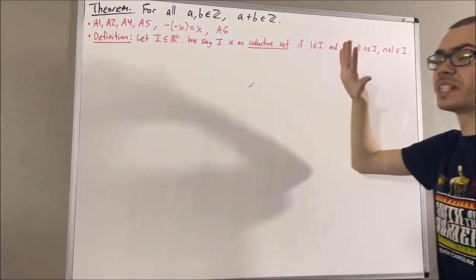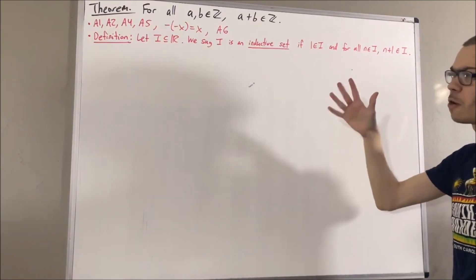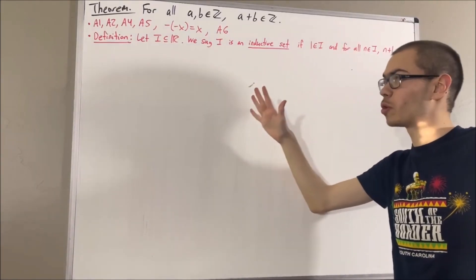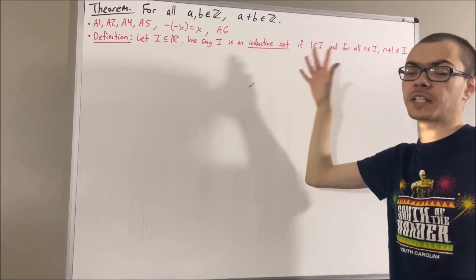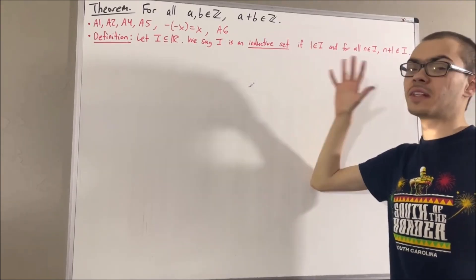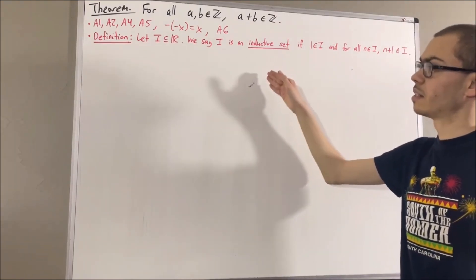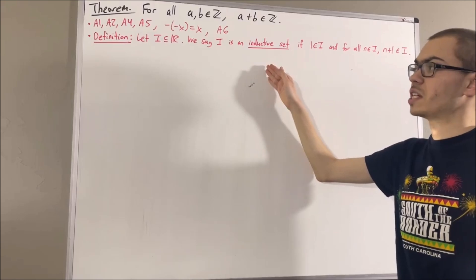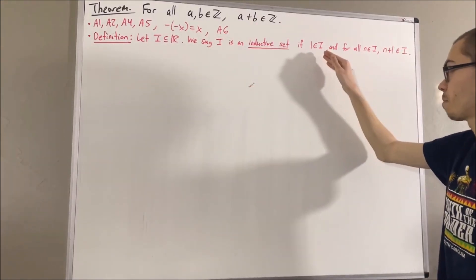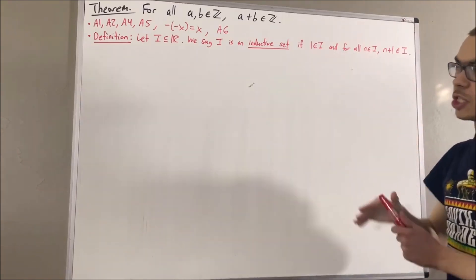For example, the set of real numbers itself is an inductive set. We defined the positive integers as the set of real numbers which belong to every inductive set. We showed that the set of positive integers itself is an inductive set, meaning the set of positive integers is a subset of the real numbers with the property that 1 is a positive integer, and for all positive integers n, n plus 1 is a positive integer.